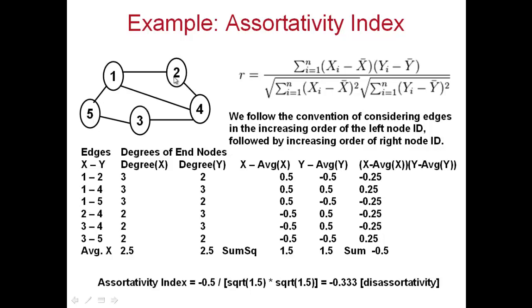Now go to vertex 2. You don't have to consider edge 2,1 again because you already wrote it as 1,2. So for vertex 2, the other edge is 2,4. For vertex 3, you have 3,4 and 3,5. You don't need to consider 4,3 since you already covered it in 3,4. Similarly no need to consider 4,1, 4,2, 5,1, or 5,3. So by following the convention of lower ID first, you cover all edges exactly once.